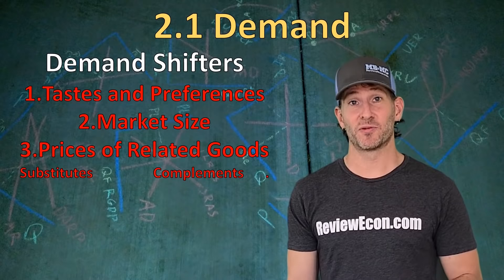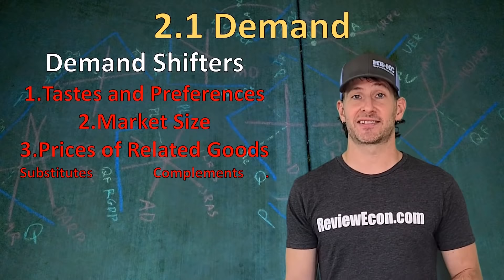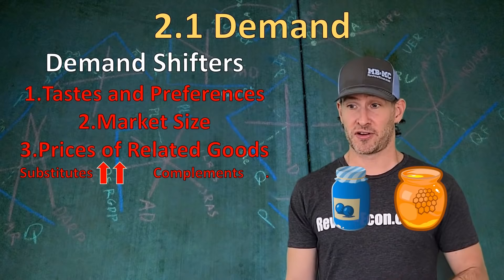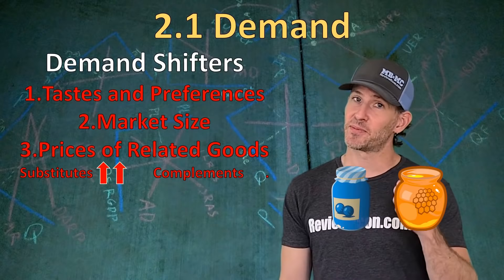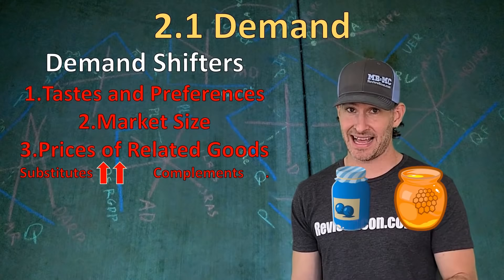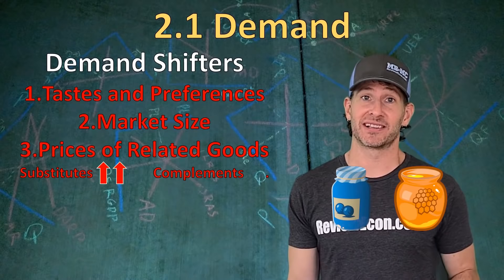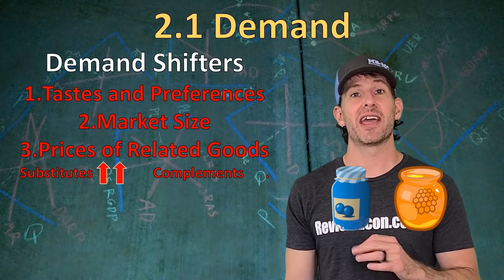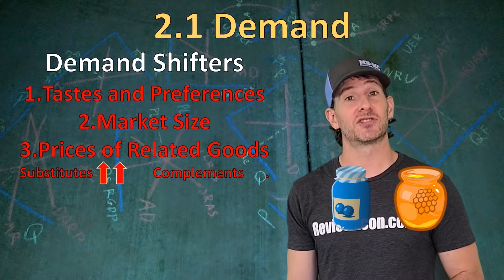The next demand shifter is prices of related goods. There are two types: substitutes and complements. With substitutes, when the price of one goes up, demand for the other also goes up — substitutes mean one good can replace the other. So when the price of one goes up, people buy less of that good and more of the other one instead. Things like jam and honey are substitutes — if the price of jelly goes up, the demand for honey goes up as well.